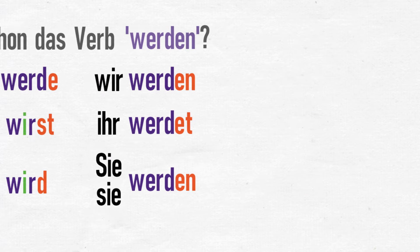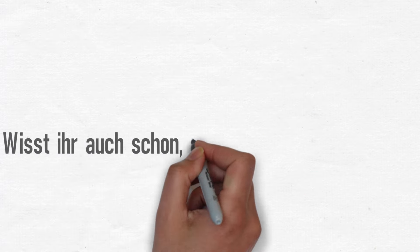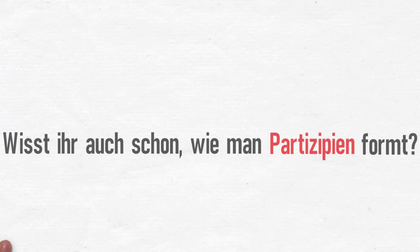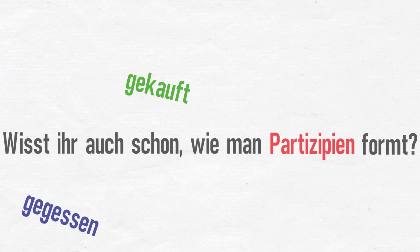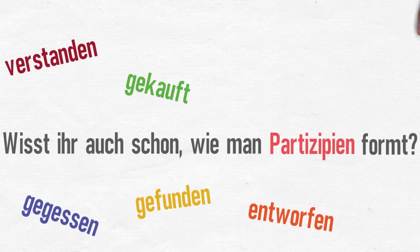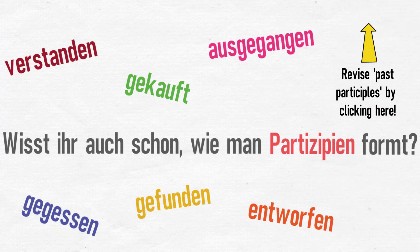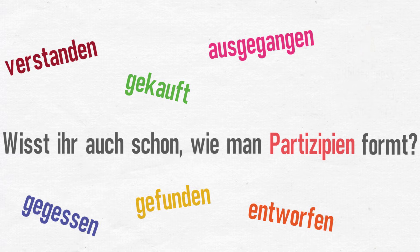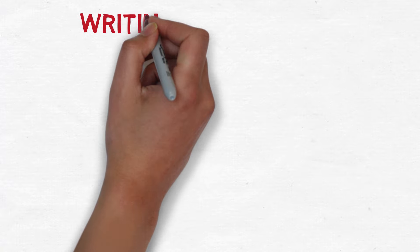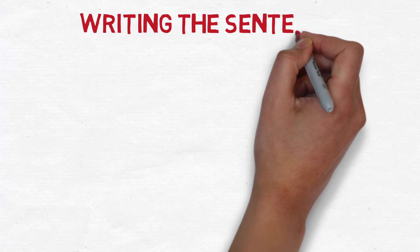The next thing you need in order to form the passive is a knowledge of what a past participle is and how to form them with regular and irregular verbs. I covered a number of these in my Perfect Tense Made Easy video, so if you need to recap this, please click this banner now. So, now that you have a knowledge of werden and the past participle, we can go ahead and make a present tense passive sentence.